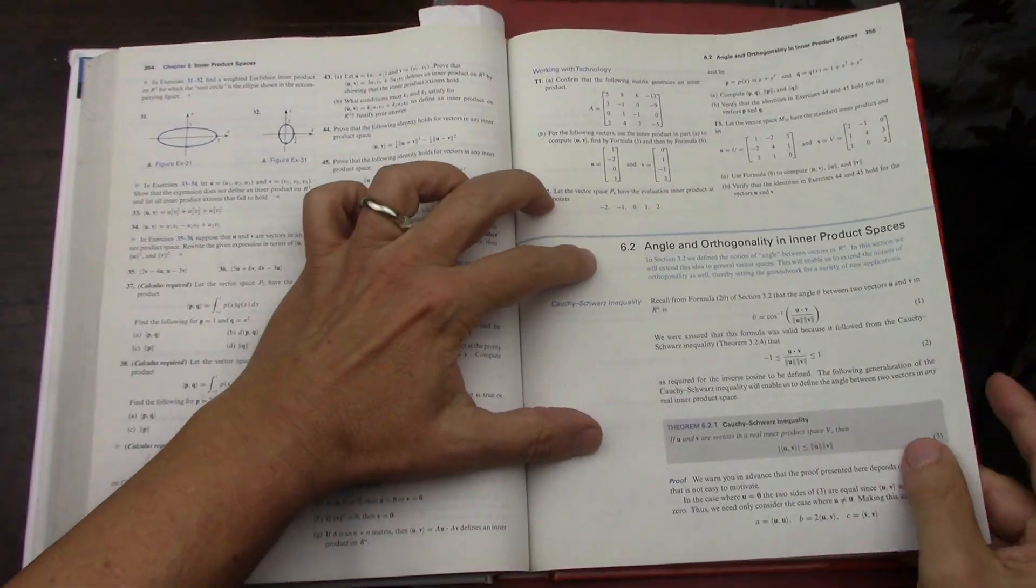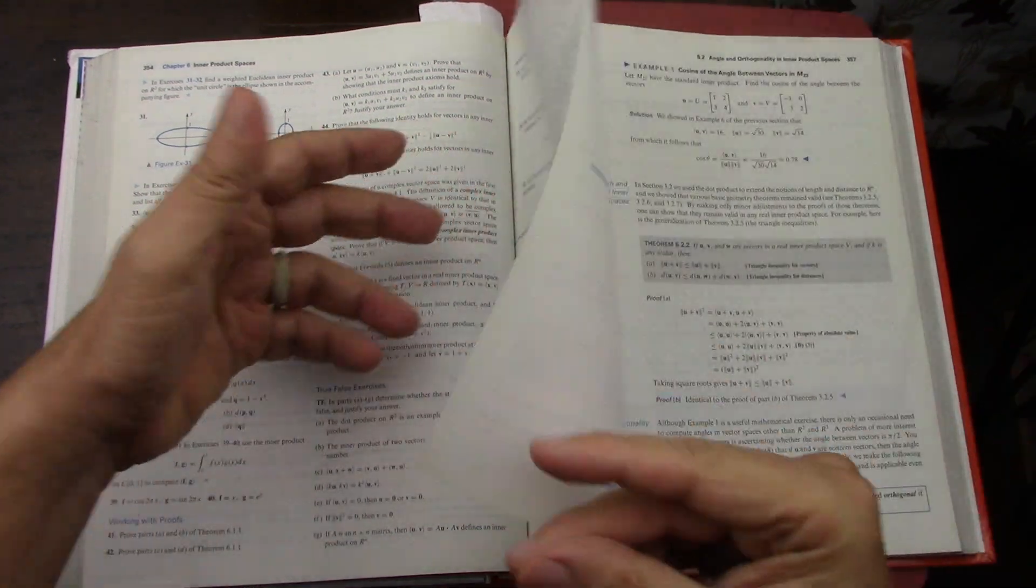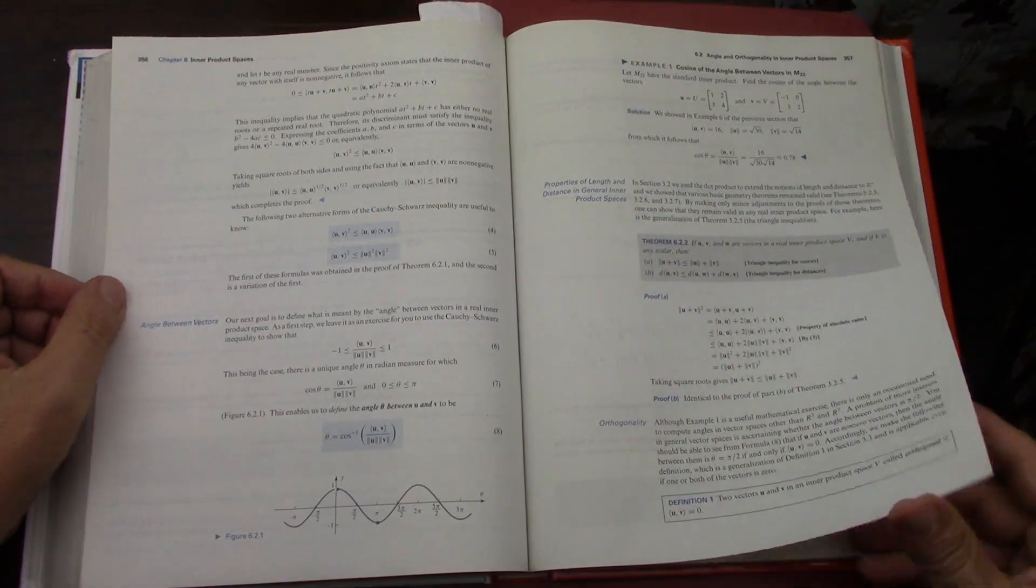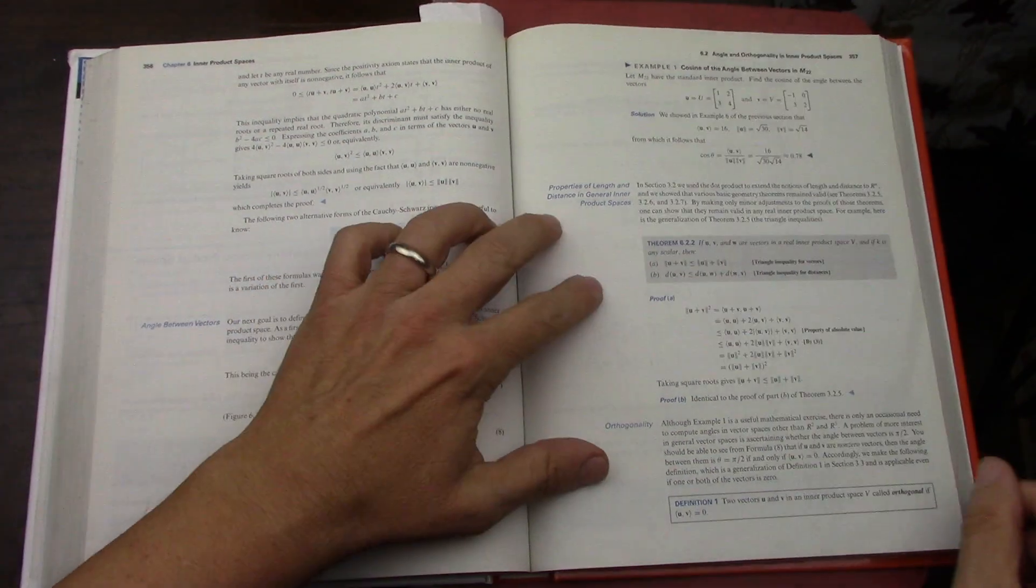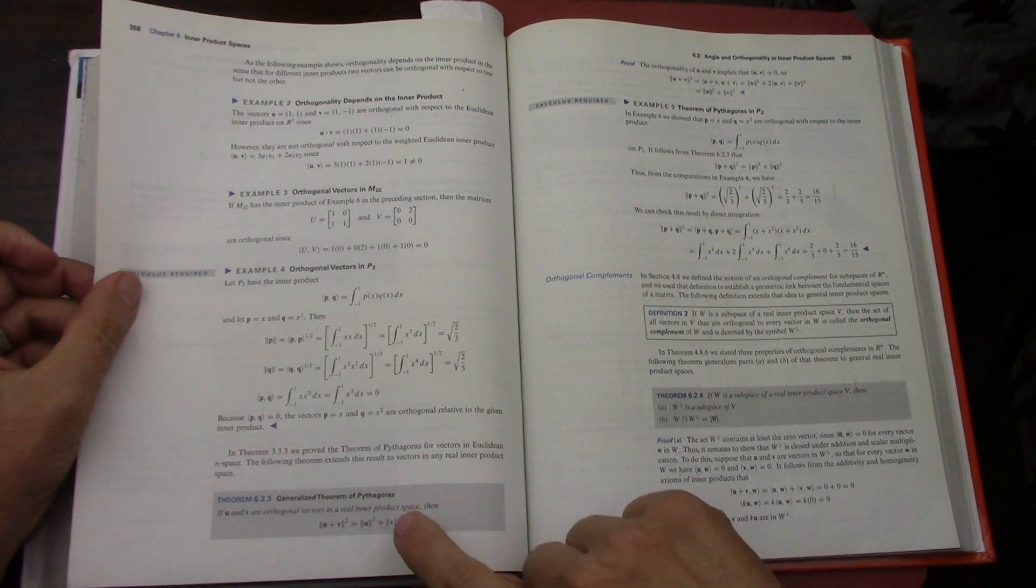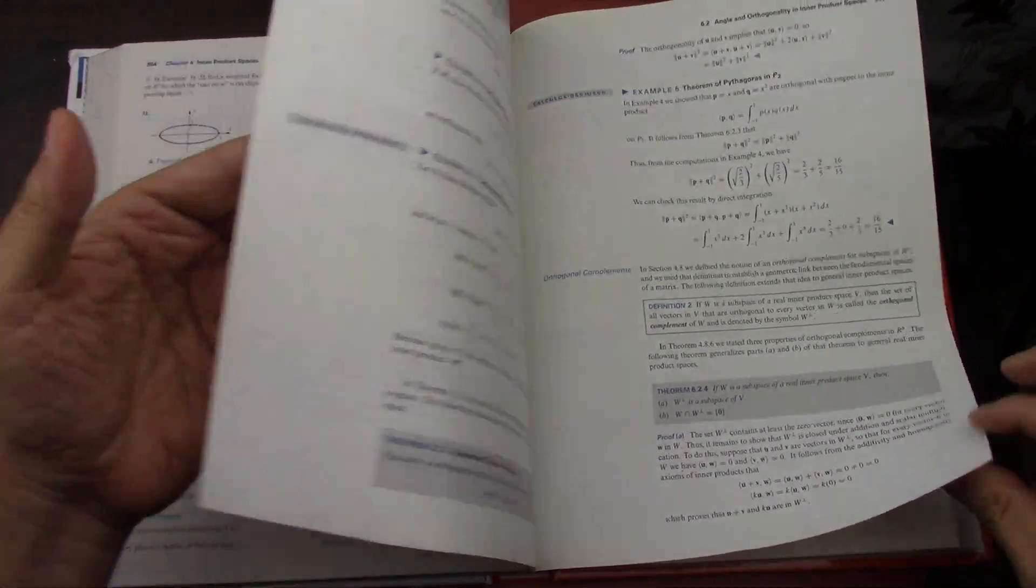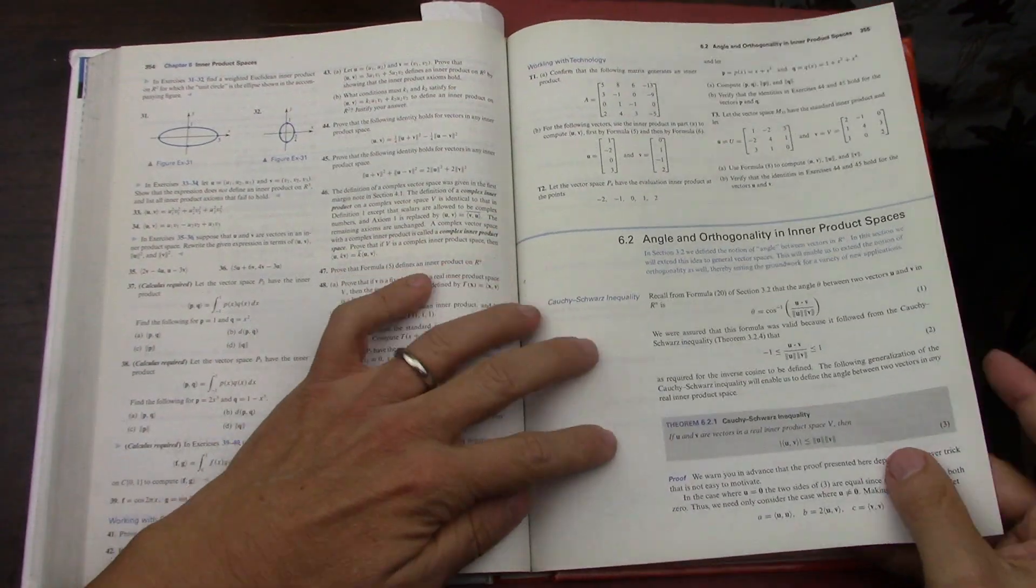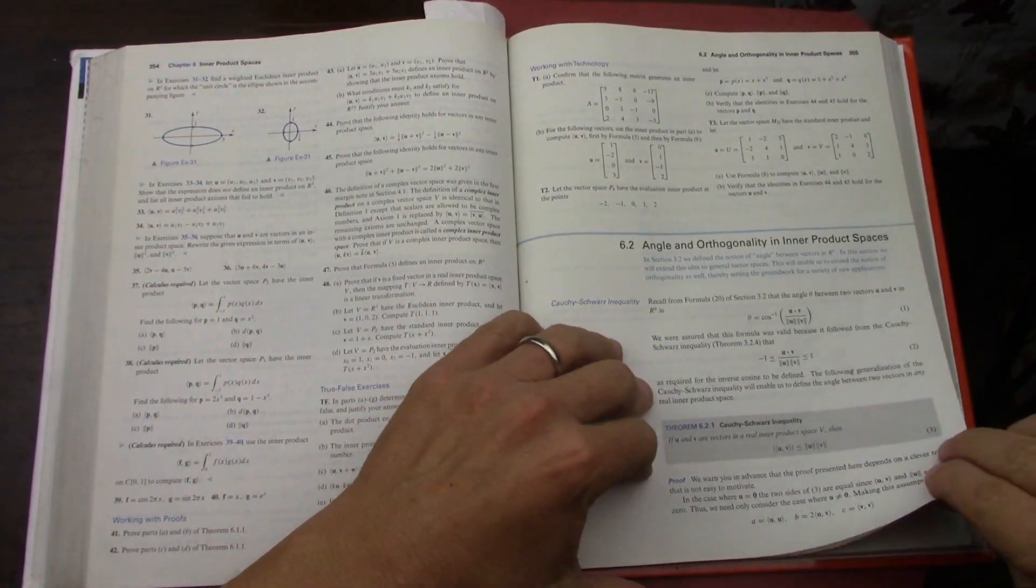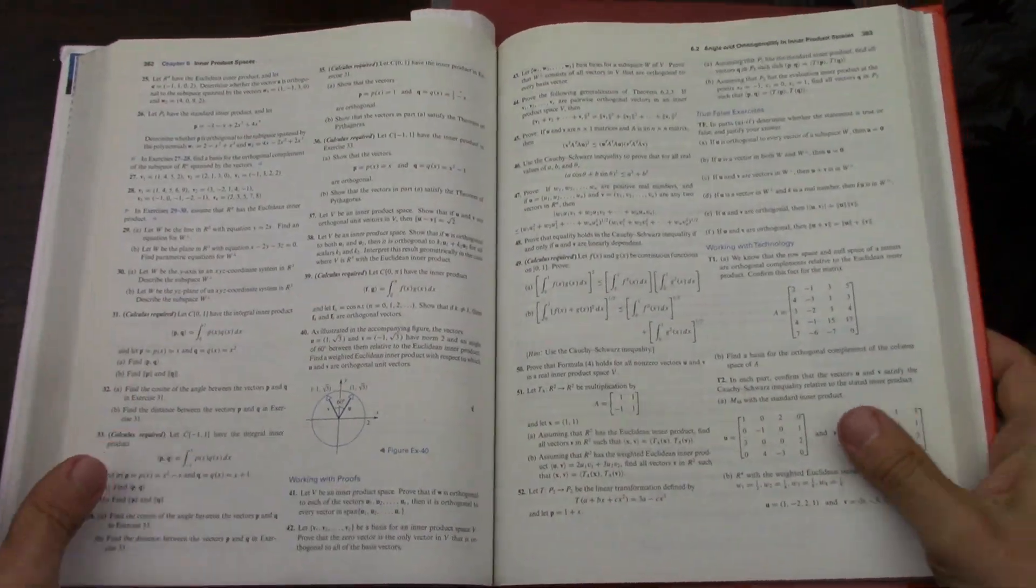The second section is all about angles and orthogonality. You have to use the triangle inequality, the generalized Pythagorean theorem, and the Cauchy-Schwarz inequality. That's really the book content for this work.